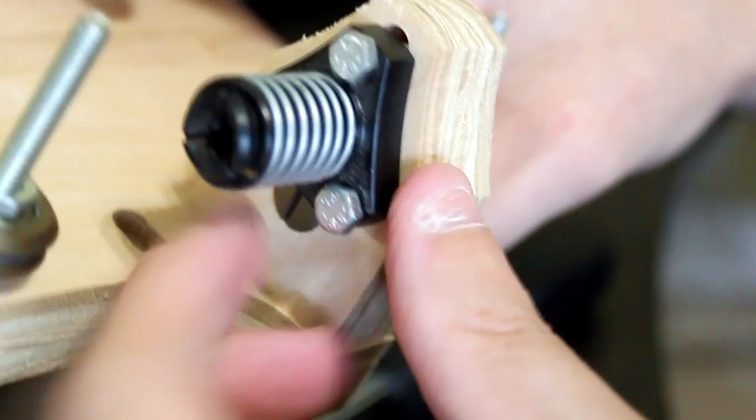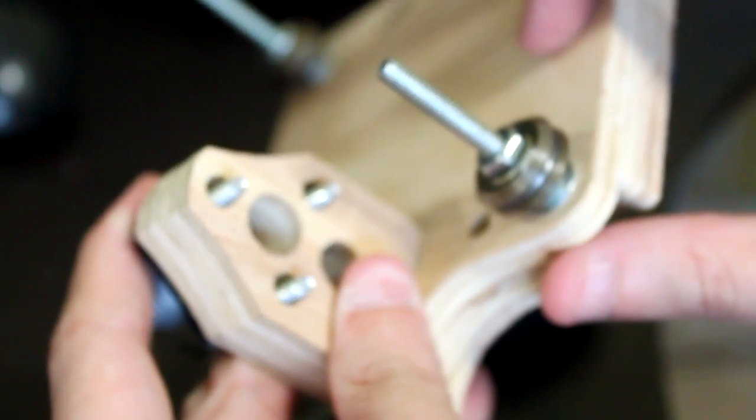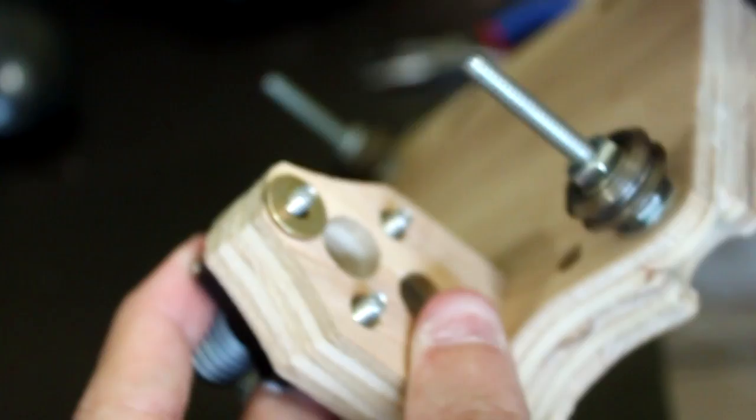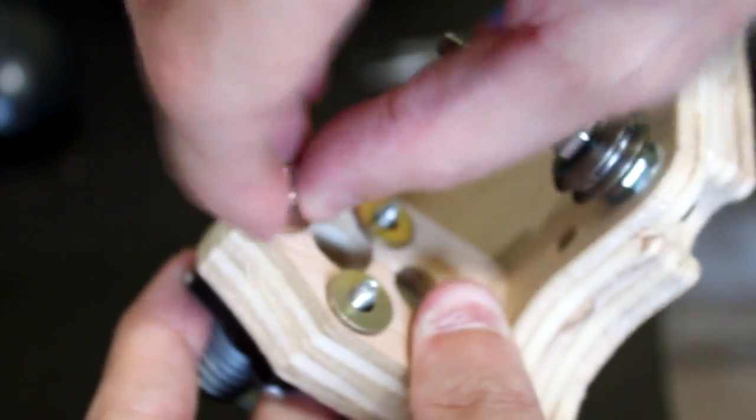Position the anti-backlash nut onto the mount and add washers and a nut to each screw.